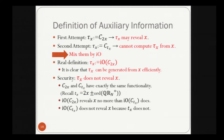For security, C_{2x} and C_{t_x} have exactly the same functionality, since 2x and t_x differ by ord(QR_N^+), which cancels in the exponent on QR_N^+. By indistinguishability obfuscation, IO(C_{2x}) and IO(C_{t_x}) are computationally indistinguishable, so IO(C_{2x}) reveals x no more than IO(C_{t_x}) does. Since C_{t_x} does not reveal x, overall IO(C_{2x}) does not reveal x.